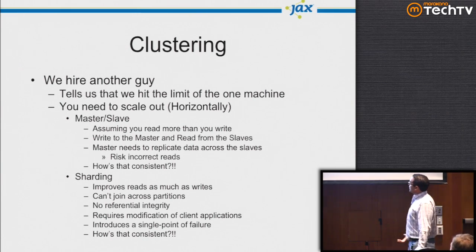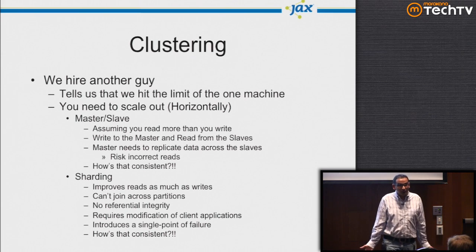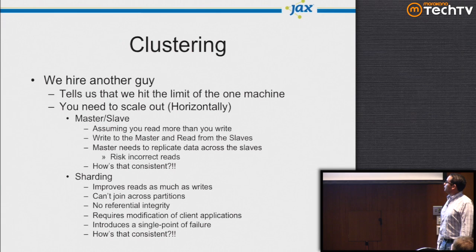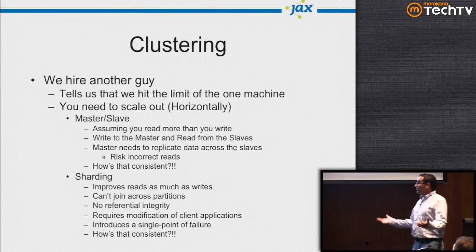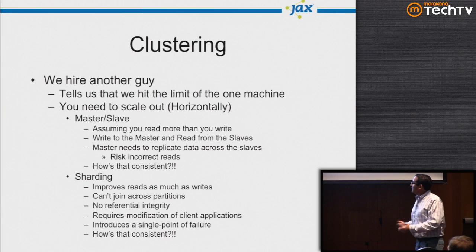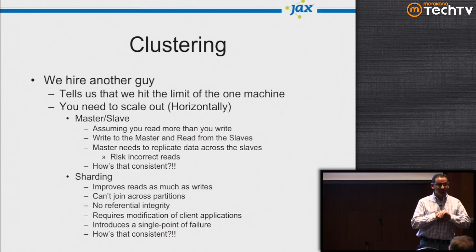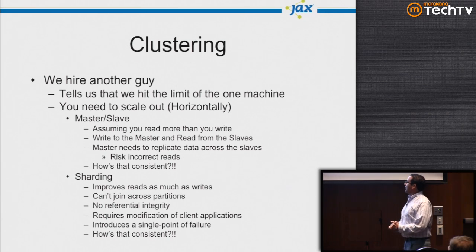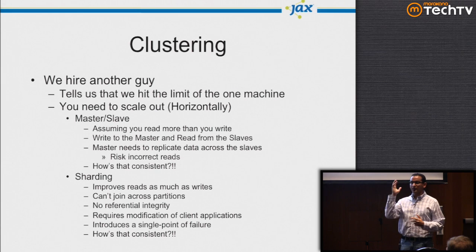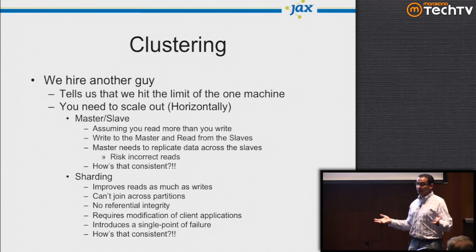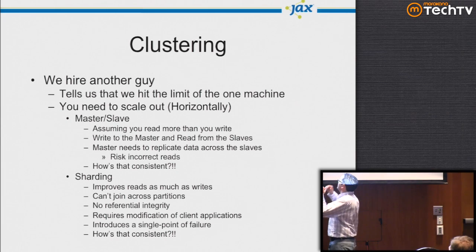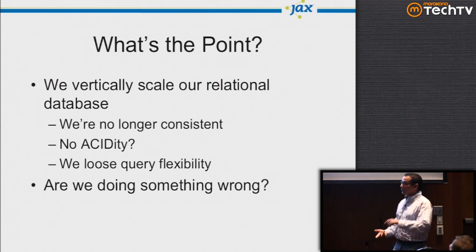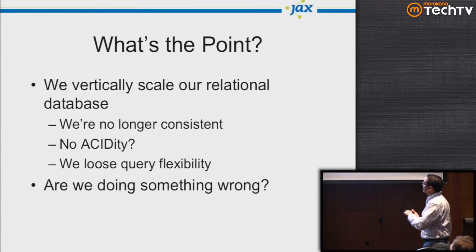Sharding was a big problem — all of a sudden you can't join across partitions because data is literally in different databases. Reads and writes improved significantly, but there was no referential integrity across tables. Client applications had to be aware of exactly which shard held the data. We also introduced a single point of failure — one machine dies and you lose a big subset of your data. So after vertically scaling our relational database, we were no longer consistent, no longer ACID, and we lost query flexibility.